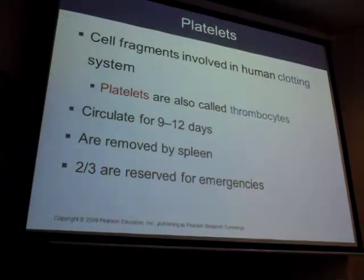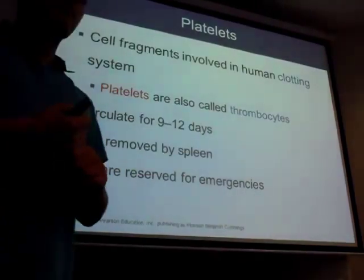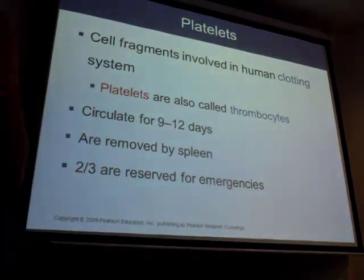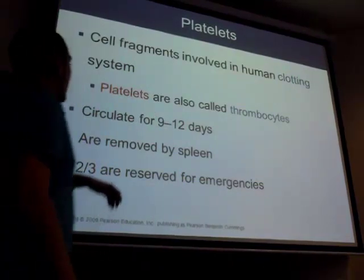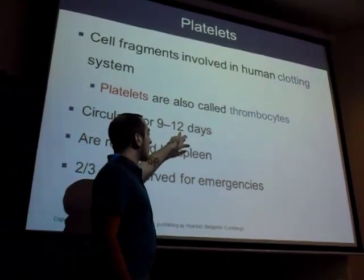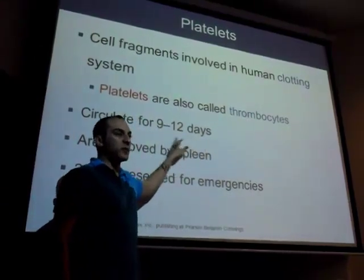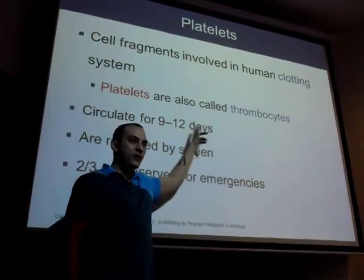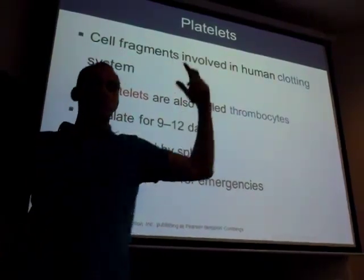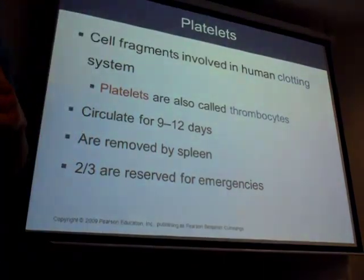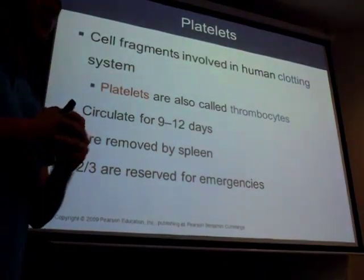Thrombocyte is the word for platelets. The red blood cell word is erythrocyte — erythro refers to red, like an erythematous area is reddish. The platelet lifespan is 9 to 12 days as opposed to a red blood cell, which is 120 days, or 4 months.